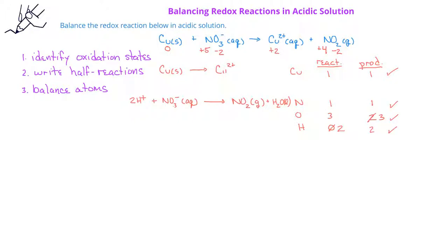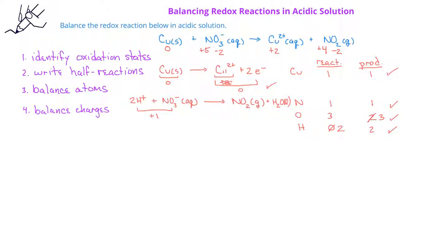Now we can balance the charges in each half reaction. In the oxidation half reaction, we have an overall charge of zero on the reactant side and plus two on the product side. We add two electrons to the product side to give an overall charge of zero on each side. For the reduction half reaction, we have two hydrogen ions and one nitrate ion for an overall charge of plus one on the reactant side, and neutral NO2 and neutral water on the product side. Therefore, we add one electron to the reactant side so we have an overall charge of zero on each side.